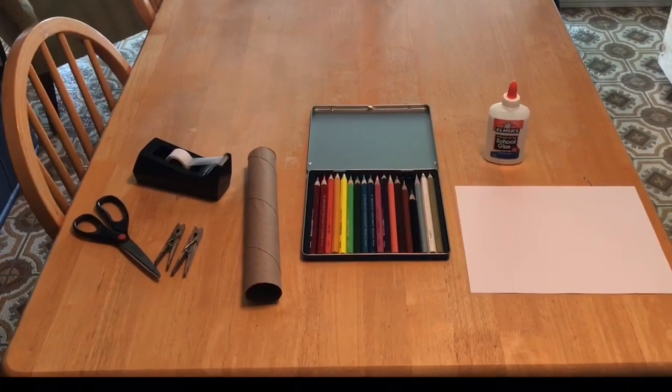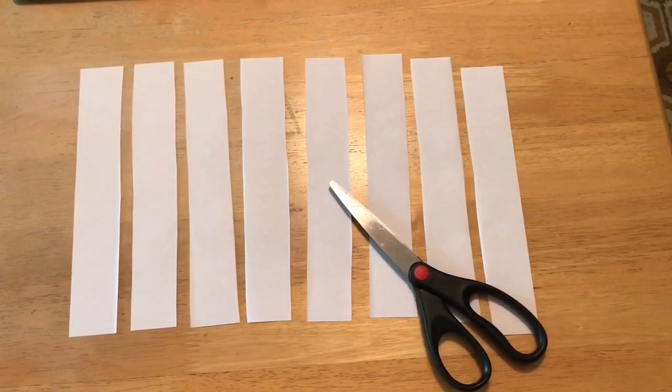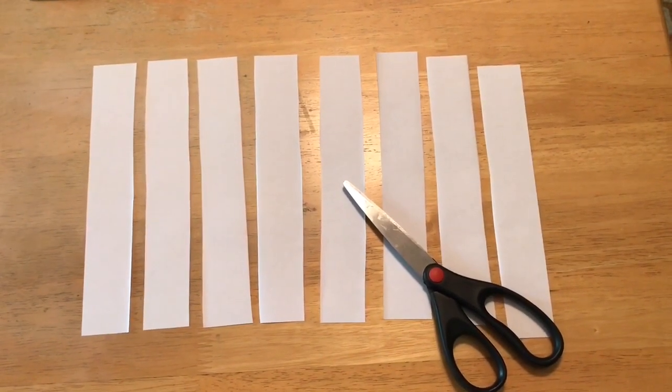The first thing I did was I folded my paper so that I had eight strips. We're actually only going to use six of the strips, but you'll have two extra in case you need them. Next, I used my scissors to cut the strips apart.